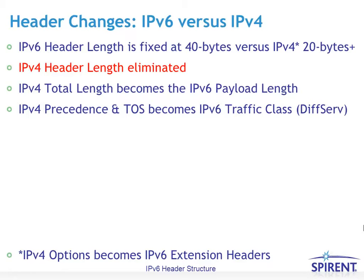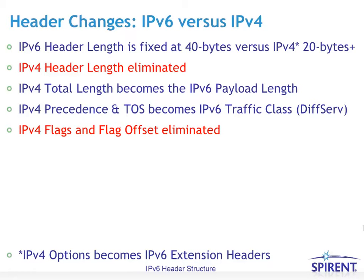The IPv4 precedence and TOS bits — type of service bits — become the IPv6 traffic class field. Both of them today use differentiated services for their definition. IPv4 flags and flag offset have been eliminated. The IPv4 flags were mostly used for fragmentation, which that concept has changed a lot in the IPv6 world, and we'll talk more about that later.